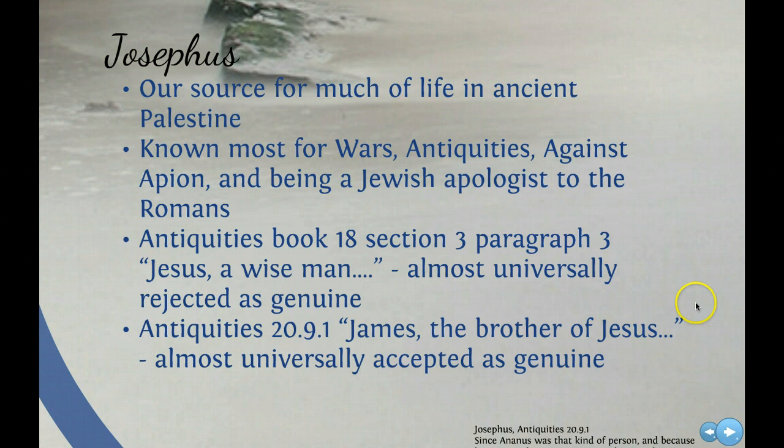In Antiquities, book 18, section 3, paragraph 3 - referenced as 18.3.3 - he says, 'Jesus, a wise man,' and this is almost universally rejected as genuine. We'll get to the reason for that in just a minute. And then again in Antiquities just two chapters later, he says, 'James, the brother of Jesus.' We know from the Gospels and from early Christian tradition that James was indeed a brother of Jesus. This is almost universally accepted as genuine.